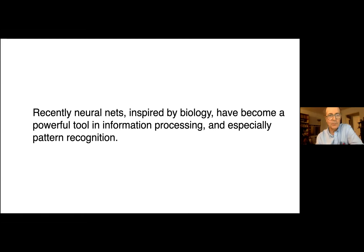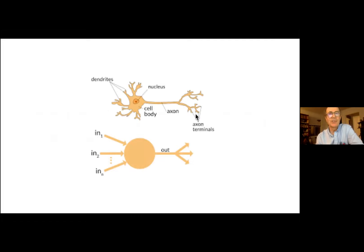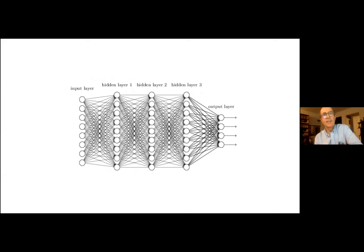Simple models of the computations performed by neurons have become a powerful tool in information processing, and especially have become the cutting edge of pattern recognition, so-called deep learning. So here is a comparison of an actual neuron to a neural net, and to the neurons that occur in a neural net. And in each case, you have inputs that are summed to give a signal that comes out that's then distributed to other neurons.